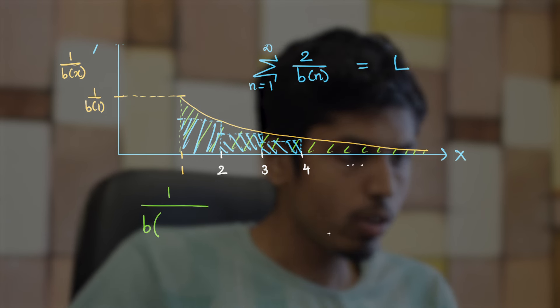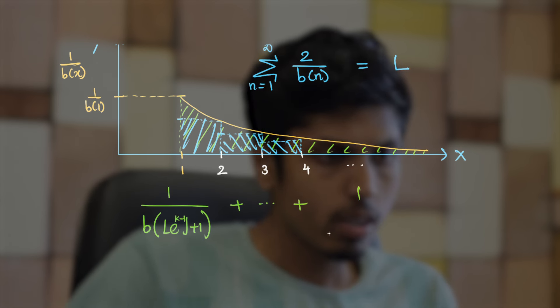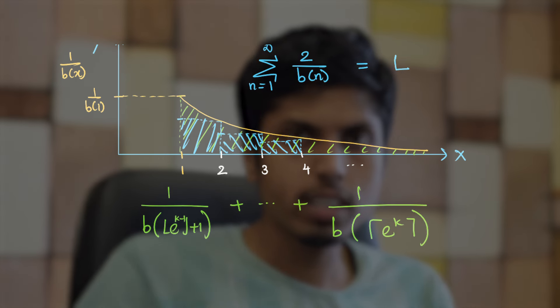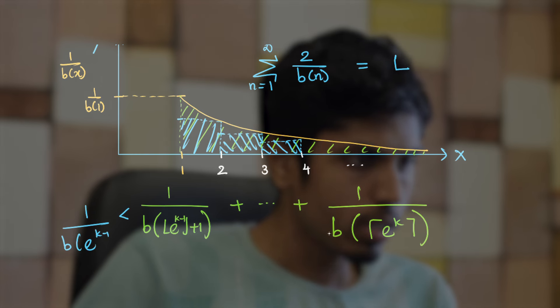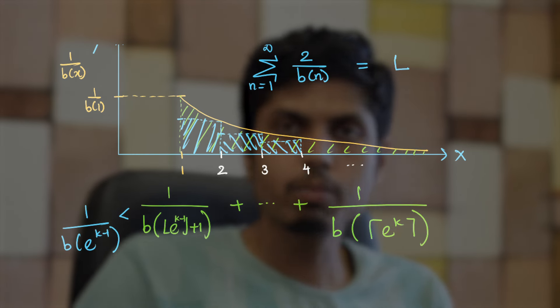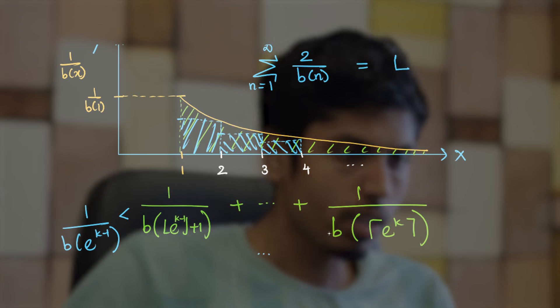So, we get 1/b(⌊e^k⌋ + 1) plus ... plus 1/b(⌈e^k⌉). Let's start from e^(k-1) + 1 till ⌈e^k⌉. Now, notice that each term is greater than 1/b(e^(k-1)). This is due to the fact that b is an increasing function. Similarly, all terms are greater than 1/b(e^(k-1)).